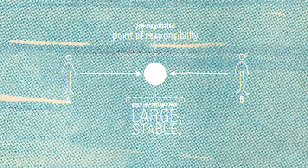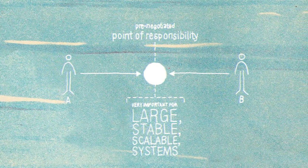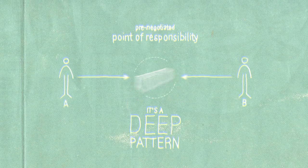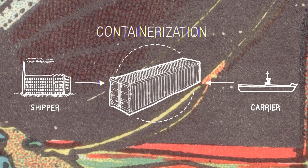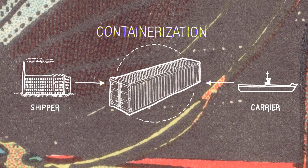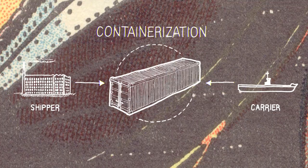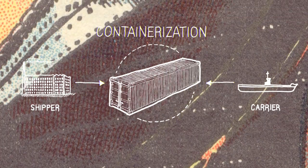This notion of having bright lines and pre-negotiated points of responsibility is very important for large, stable, scalable systems. It's a deep pattern, and containerization is simply the example of that pattern applied to the shipping industry.